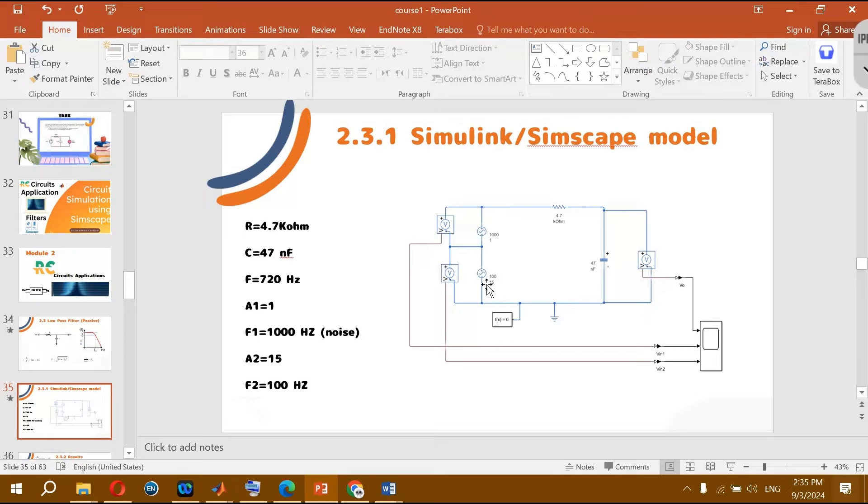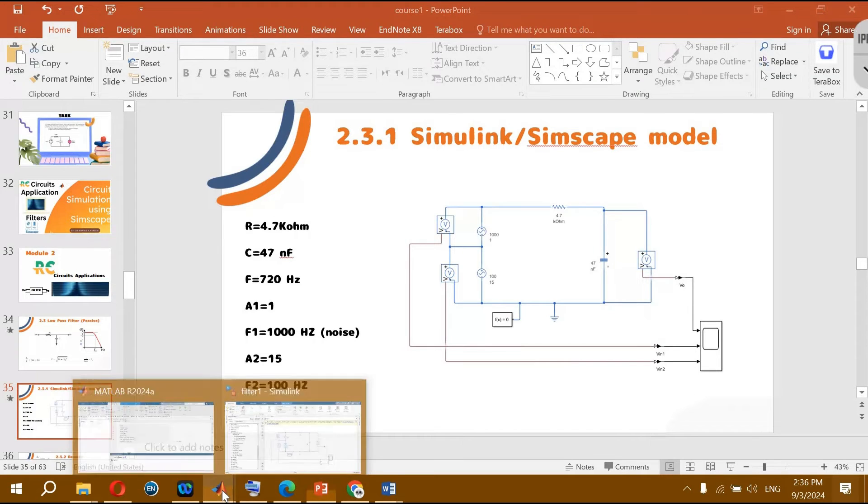And the amplitude of this source is 15 with 100 Hz frequency. It is low pass filter, that makes me consider the amplitude 15 and frequency 100 as our main signal, and the noise will be one thousand hertz. So let's apply this value in our circuit in MATLAB Simulink.